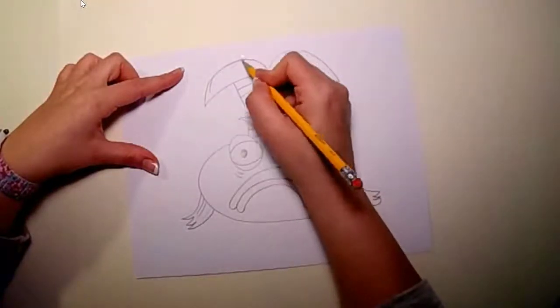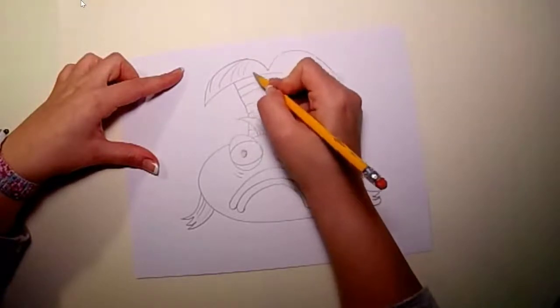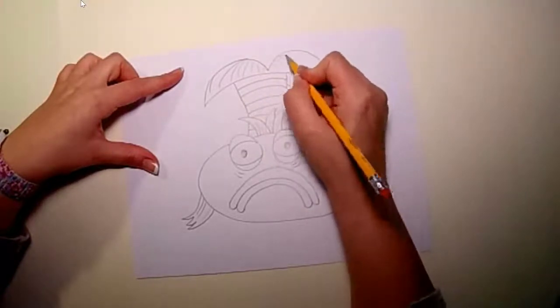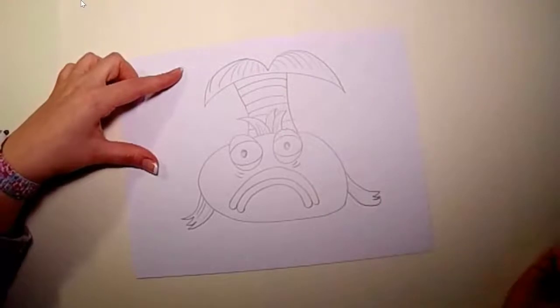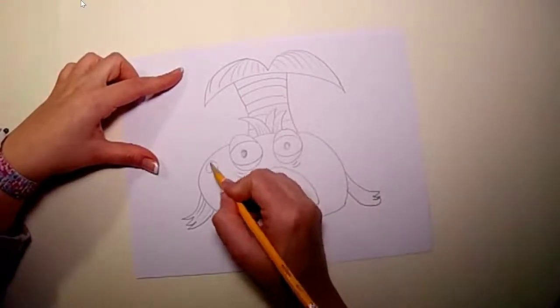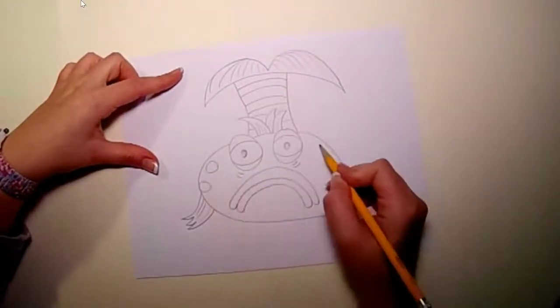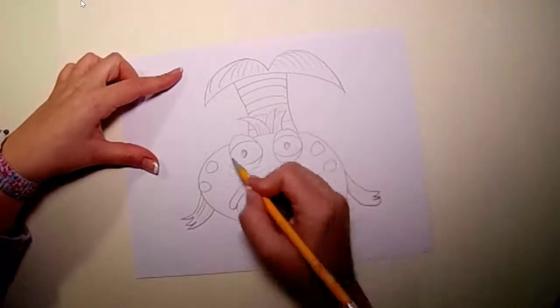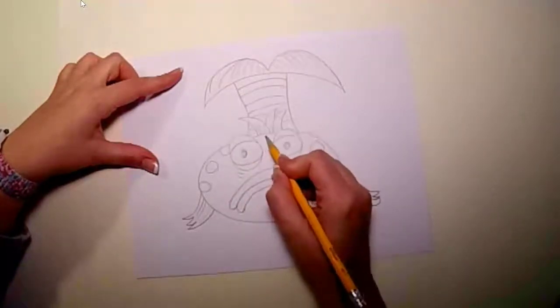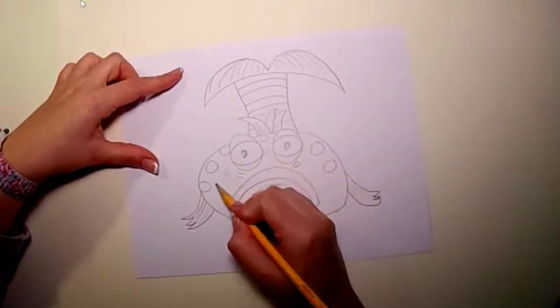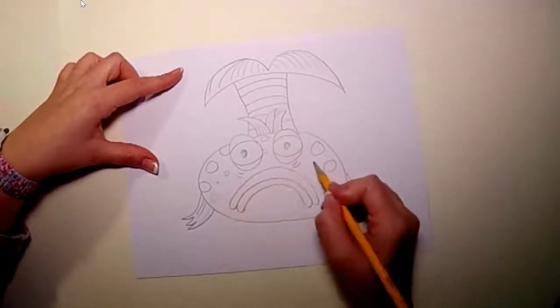You can even add some lines on the tail to show the texture. Now let's not forget Pout Pout Fish's purple polka dots. We will add some polka dots onto his face. What an interesting looking fish.